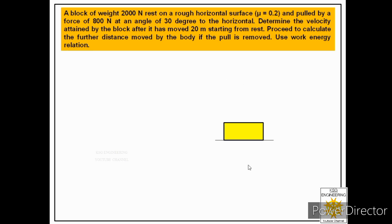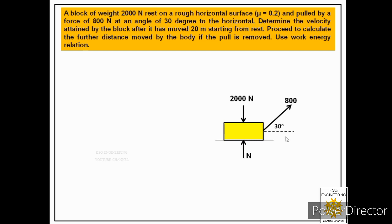To solve this, we first complete the free body diagram. We represent the weight acting in the downward direction, which is 2000 Newton. Then we show the normal pressure N, and the pull of 800 Newton acting on the block at an angle of 30 degrees to the horizontal. Since the block rests on a rough horizontal surface, we must also consider frictional force. As the pull acts to the right, the block moves right, so friction acts towards the left — let us call that F.